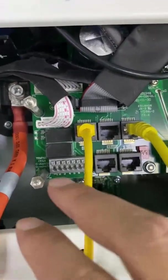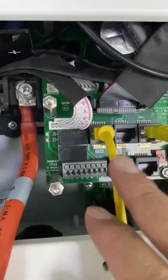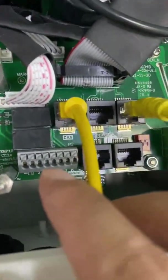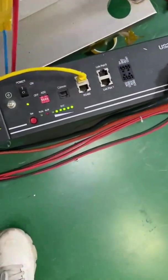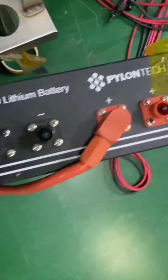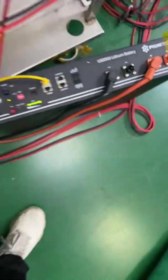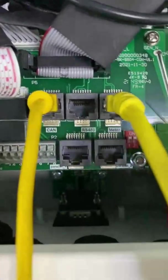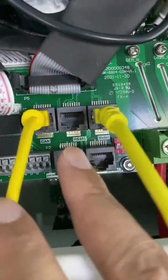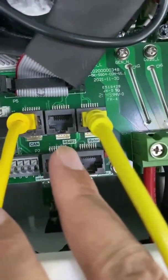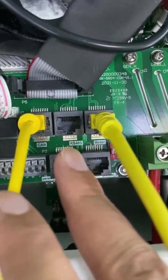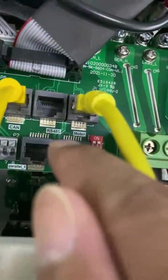And this is the CAN communication port. CAN port. It is used to communicate with the battery. And also it gives you RS-485 port. This port also is used to communicate with the battery.